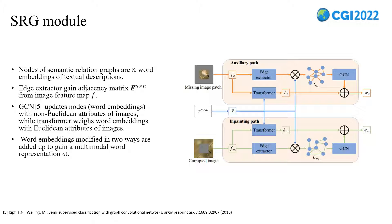In the SRG module, the edge extractor turns the image feature into an adjacency matrix of the graph, whose dimension matches the number of words in a textual description. We incorporate GCN to update the node features by propagating its adjacency matrix, which weighs textual words in non-Euclidean space. The image feature maps also combine the word embeddings in a transformer to weigh textual words in Euclidean space. As a result, the non-Euclidean and Euclidean attributes of images are added to gain a multimodal word representation omega.